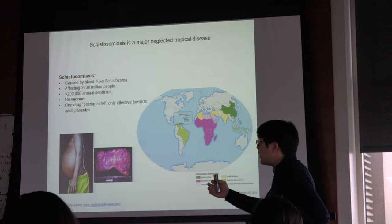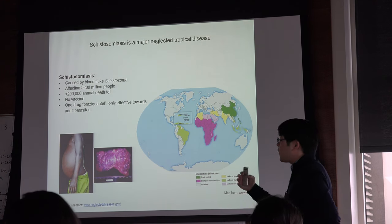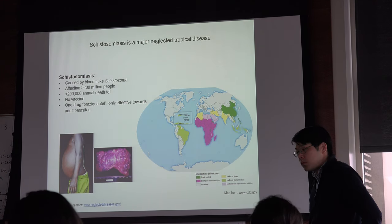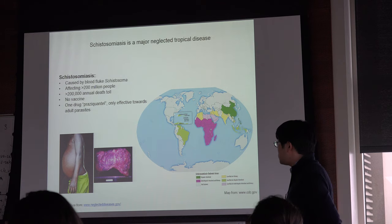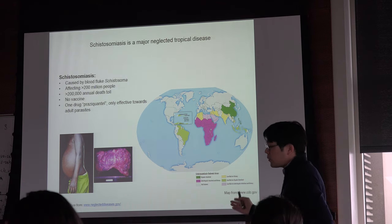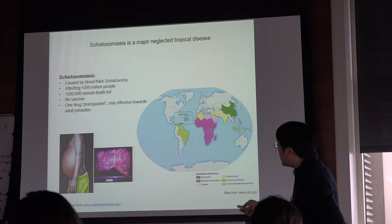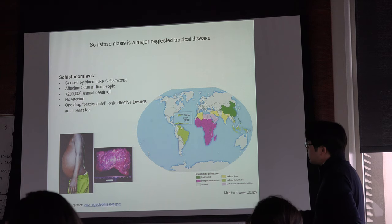This leads to granuloma formation and tissue fibrosis that causes irreversible damage to these tissues. This is the disease schistosomiasis, and it's caused by the eggs of the adult parasites.